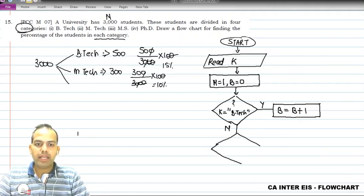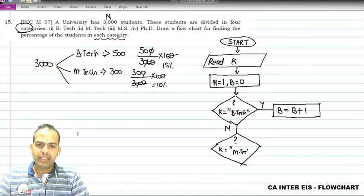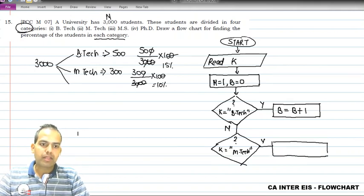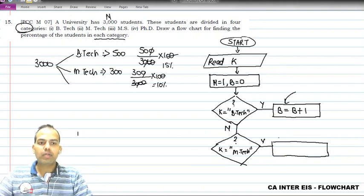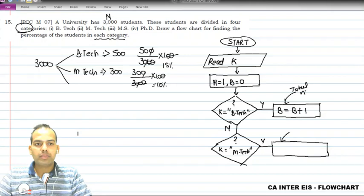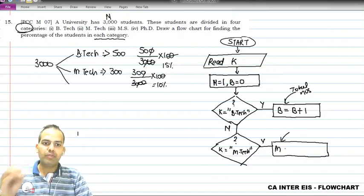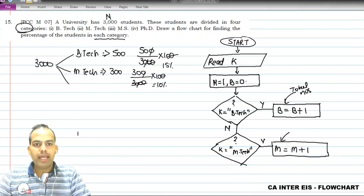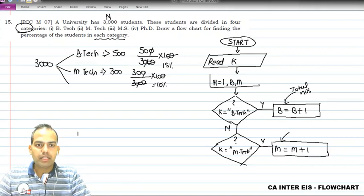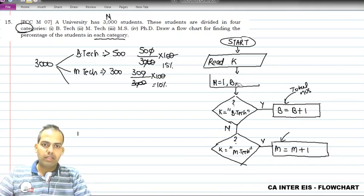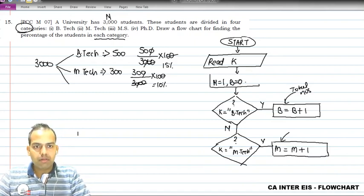If the answer to the B.Tech check is no, I have to check whether the student belongs to the M.Tech category. If yes, I store the total using variable m - m equals m plus 1. I also define m as 0 initially. We can write all the initial variable definitions together in one box.